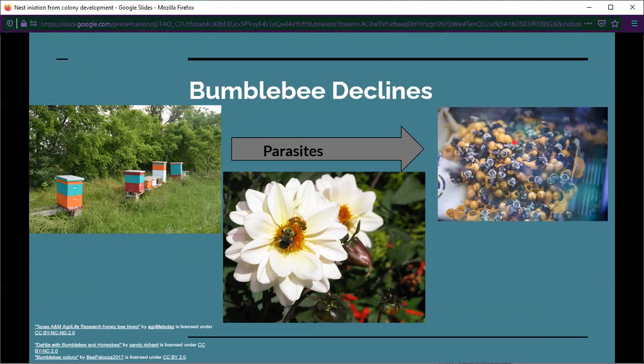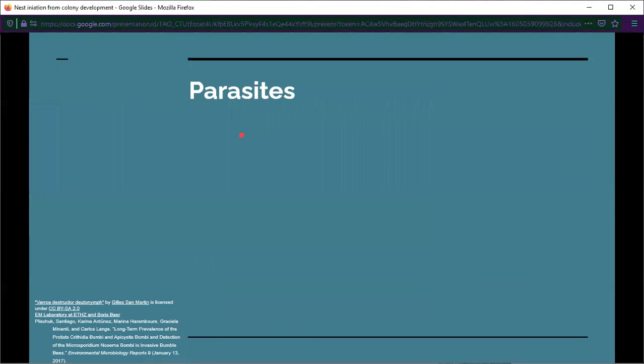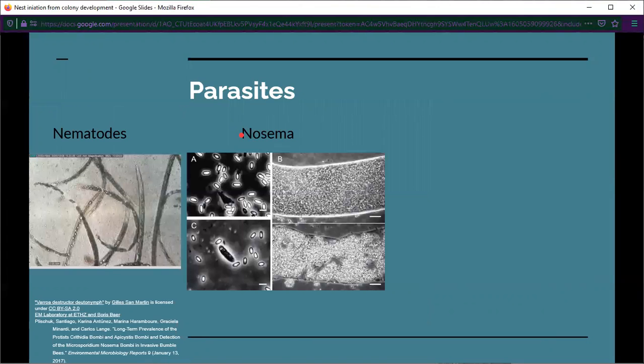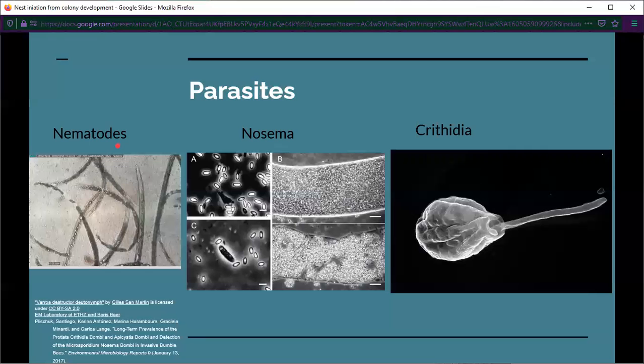We need to first discuss the different types of parasites that could potentially be infecting the queens around Laramie. There's three main ones. There's nematodes, which can be quite varied. Some are benign, some are very devastating on queens. Then there's also Nosema and Crithidia, which are two examples of microparasites. At low levels of infection they can be quite benign, but when they reach high levels, they can lead to colony collapse, worker death, and queen death.